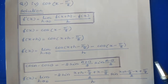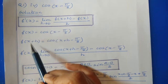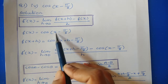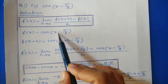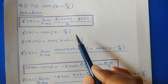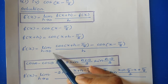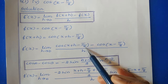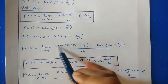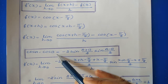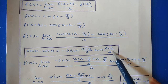Fourth sub-question: cos(x minus 5π/8). Let f(x) equal to cos(x - 5π/8). Find f(x+h) by replacing x with x+h, giving cos(x+h - 5π/8). Putting these in the formula: f'(x) equals limit h tends to 0, cos(x+h - 5π/8) minus cos(x - 5π/8) divided by h. To solve this, use the formula: cos A minus cos B equals minus 2 sin((A+B)/2) times sin((A-B)/2).